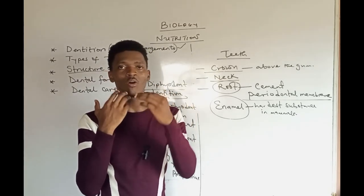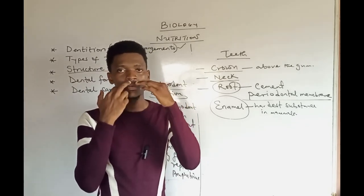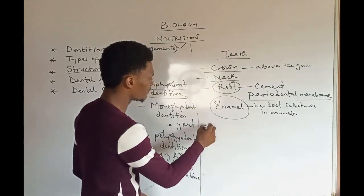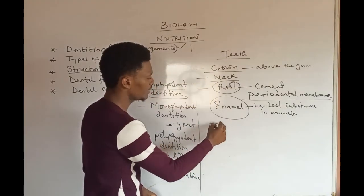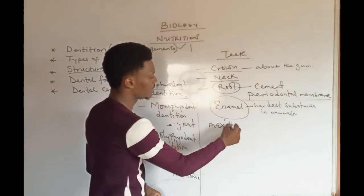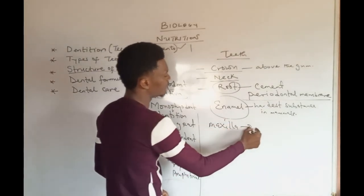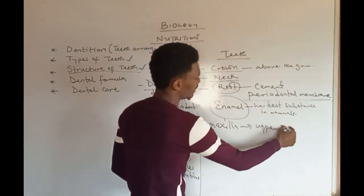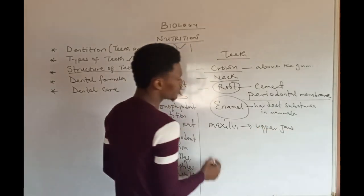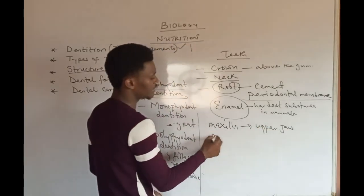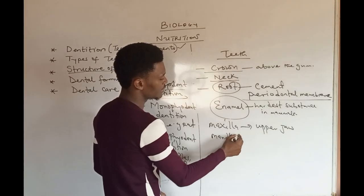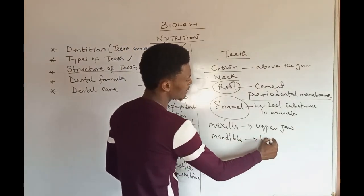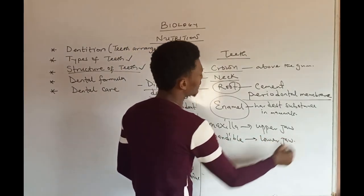The upper jaw is called the maxilla, while the lower jaw is called the mandible.